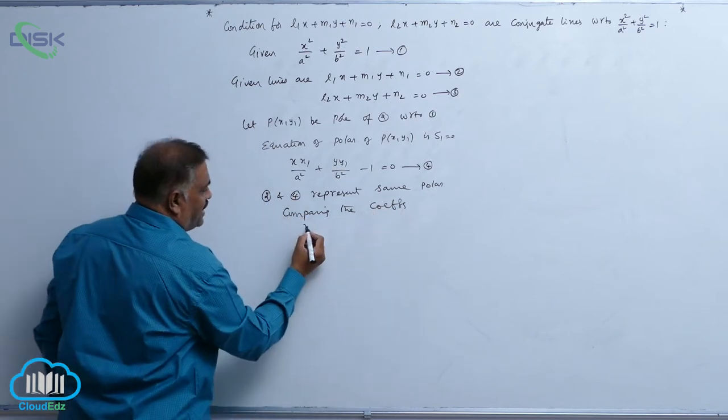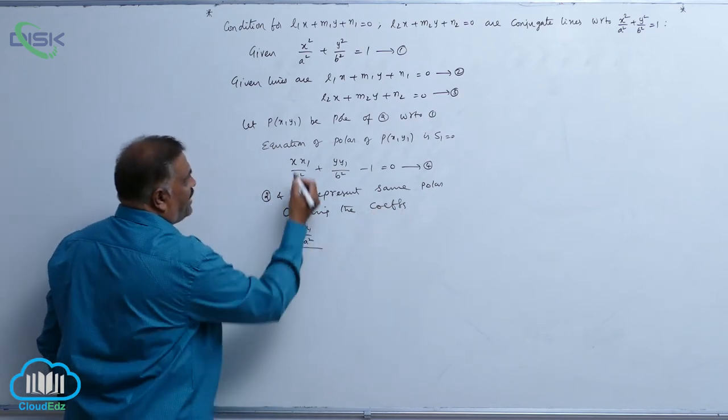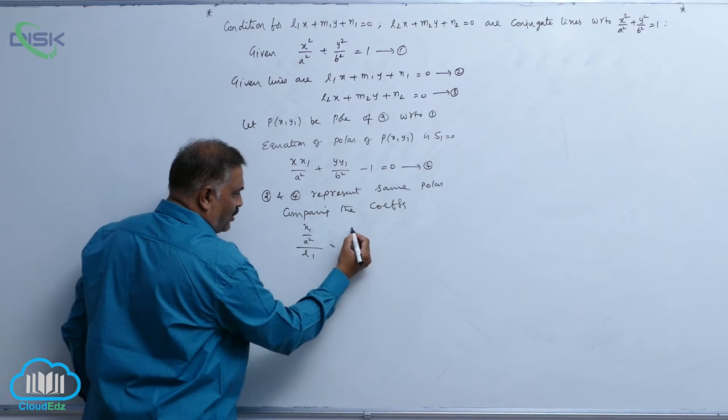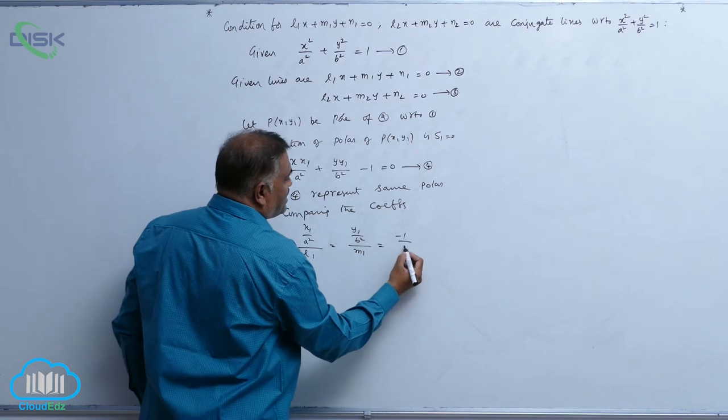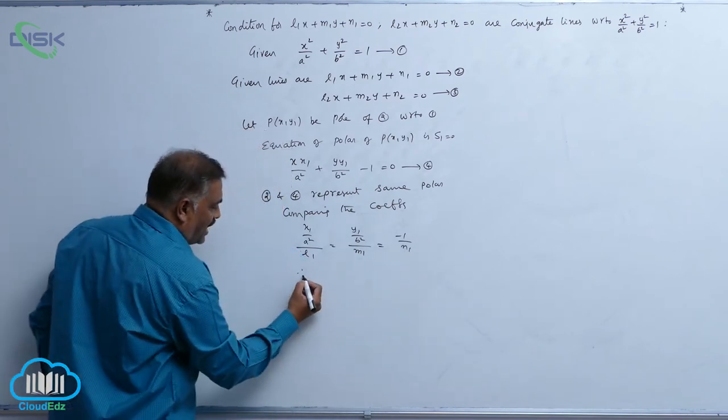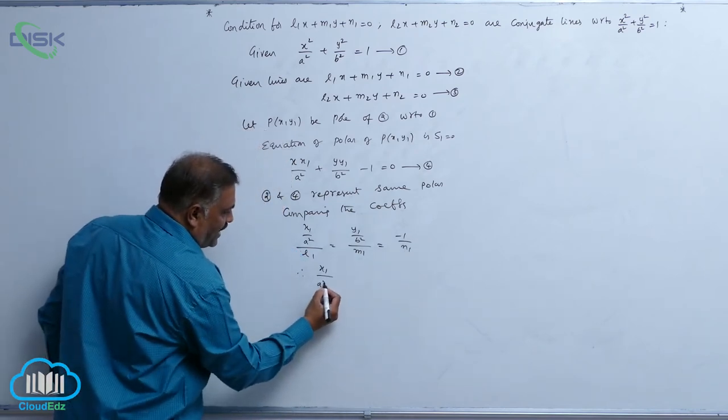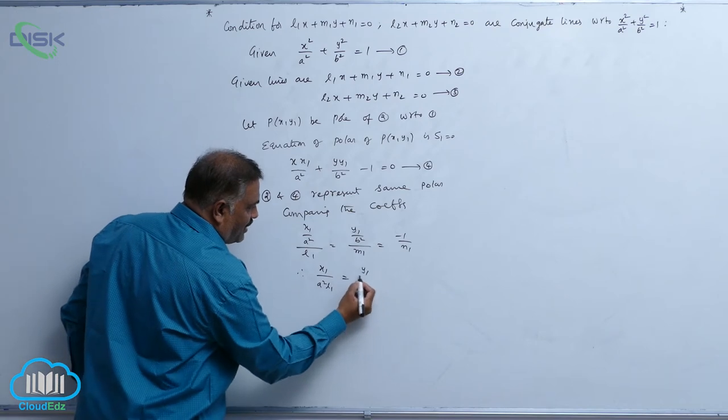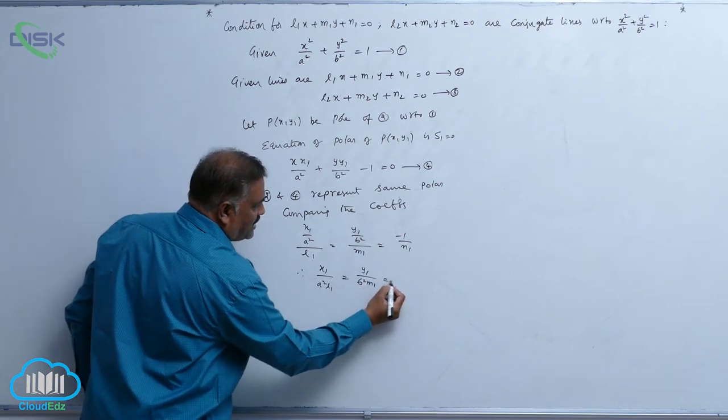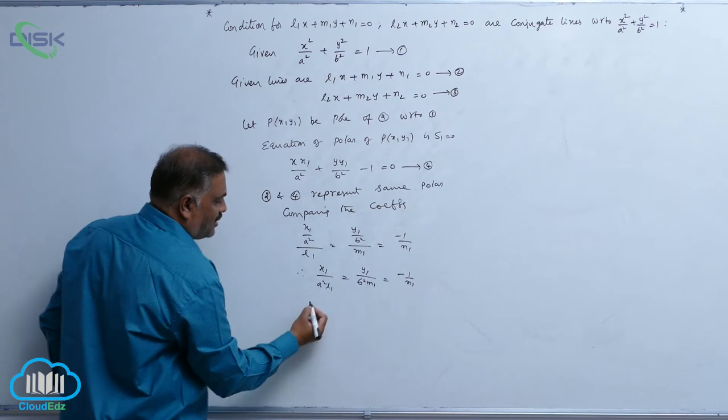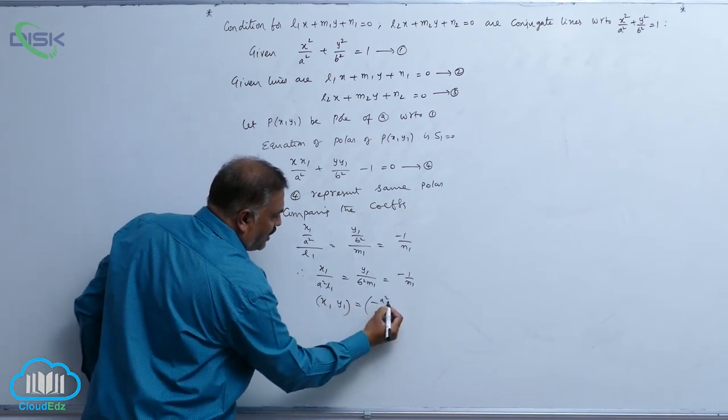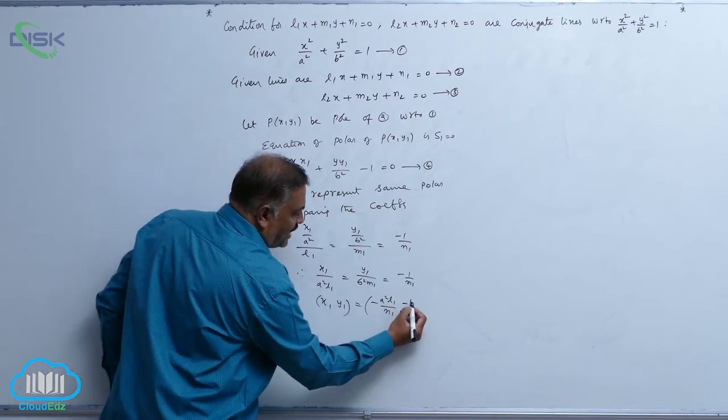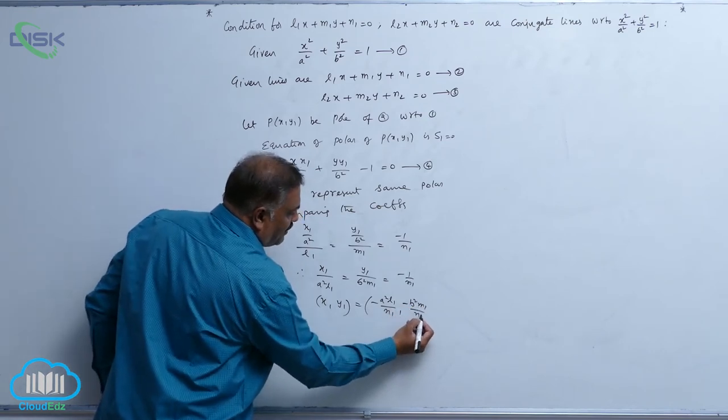what do you get now? You see, x1 by a square divided by l1 is equal to y1 by b square divided by m1 equal to minus 1 by n1. Therefore, x1 comma y1 is equal to minus a square l1 by n1 minus b square m1 by n1.